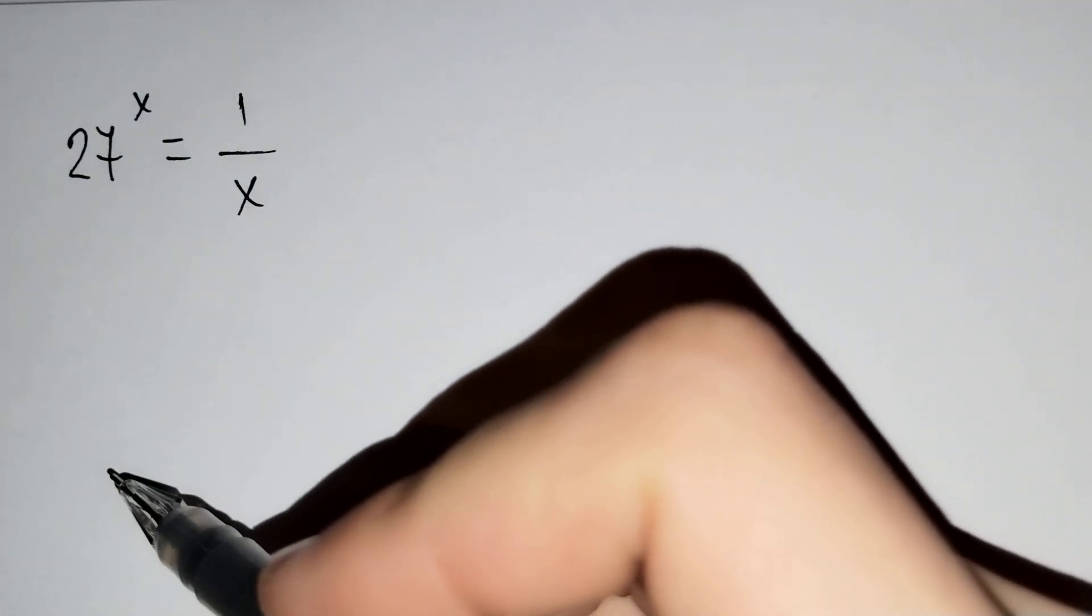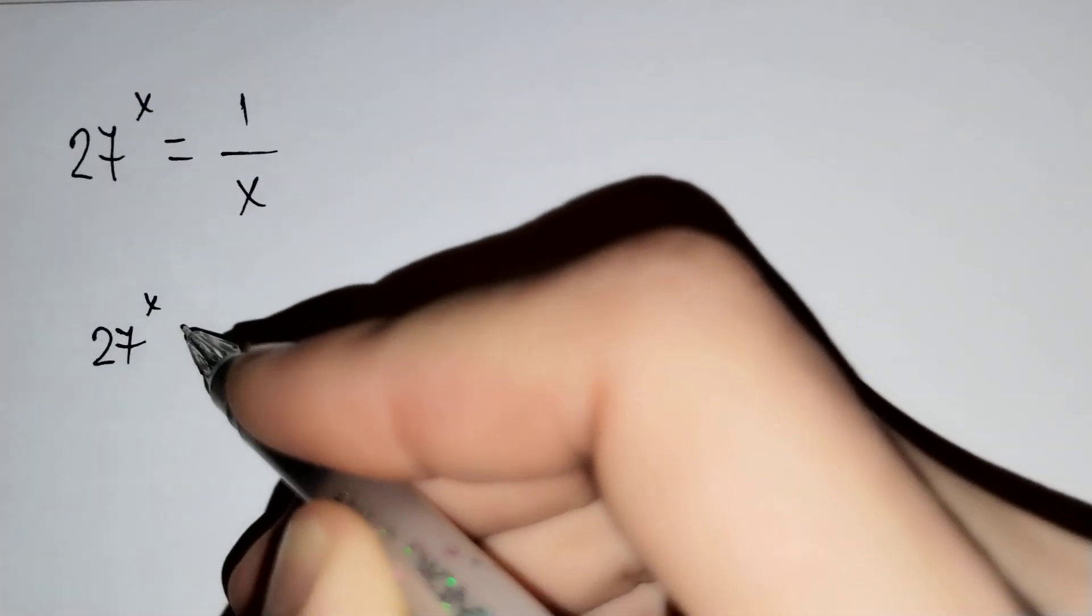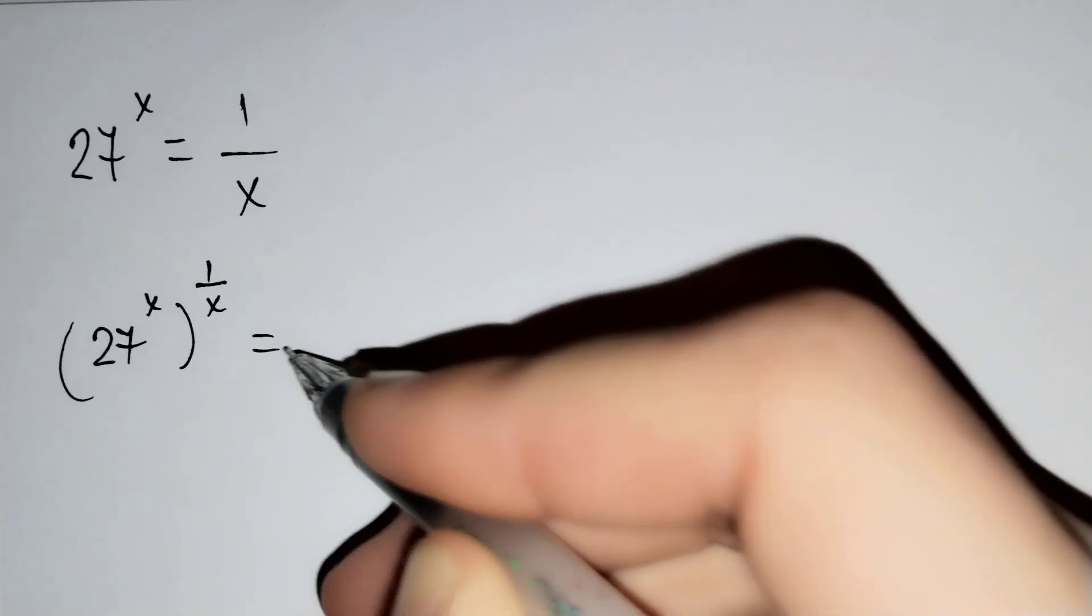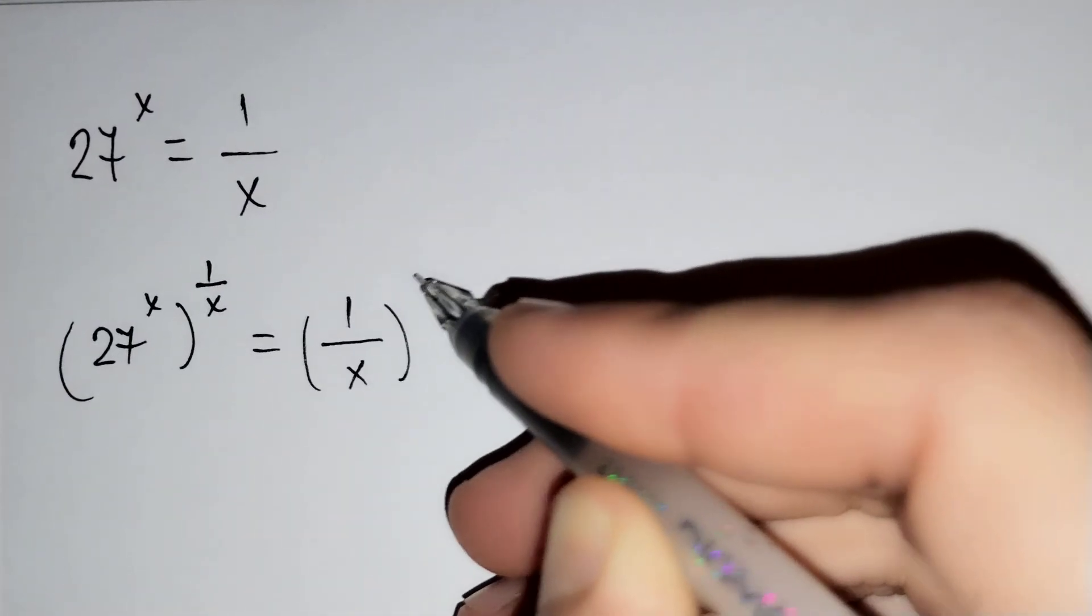That's why we should do it. (27^x)^(1/x) = (1/x)^(1/x).